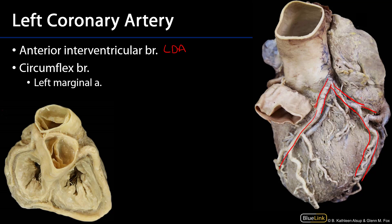Returning to this photograph — posterior here, anterior there — we can see the RCA following the sulcus and reaching the crux, giving rise to the posterior interventricular branch as well as the AV nodal branch, which we can see here going to the atrioventricular node. Those are the coronary arteries, left and right, and their various branches. Thank you very much for your time.